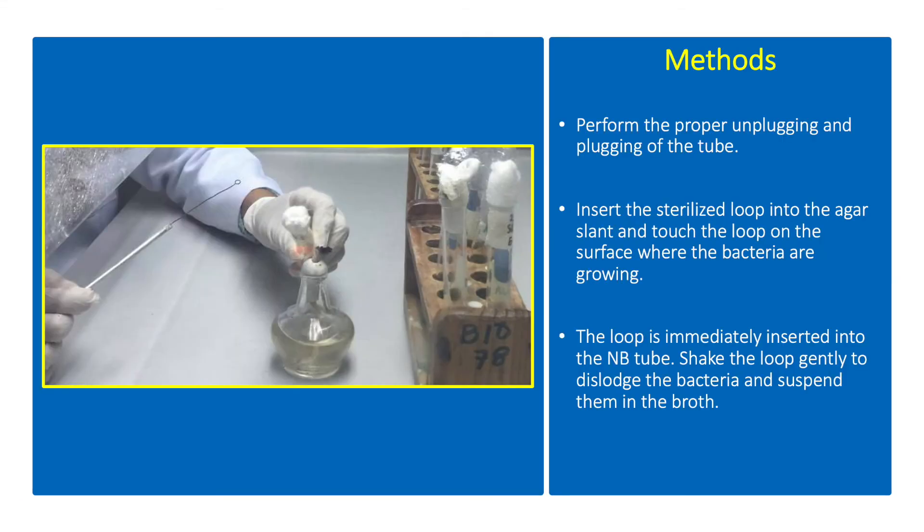Perform the proper unplugging and plugging of the tube. Insert the sterilized loop into the agar slant and touch the loop on the surface where the bacteria are growing. Immediately insert the loop into the NB tube. Shake the loop gently to dislodge the bacteria and suspend them in the broth. Withdraw the loop from the broth tube and flame sterilize.